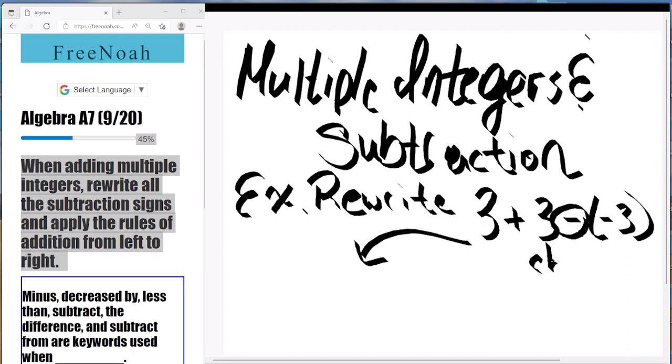That rule that we've been learning for the last three, four videos. So we're going to change this minus sign into a positive. So we have 3 + 3. Now,